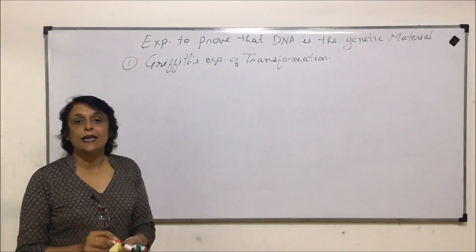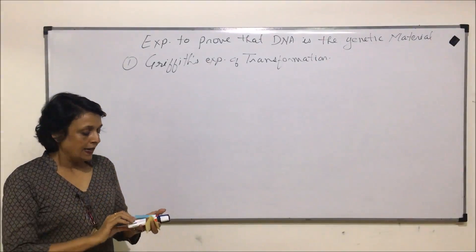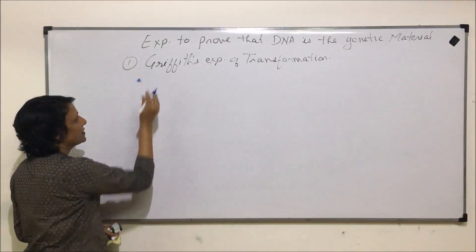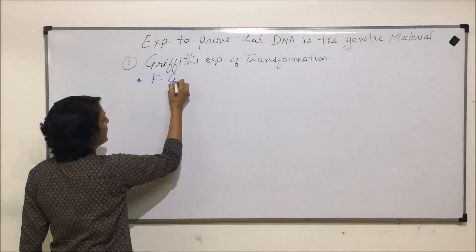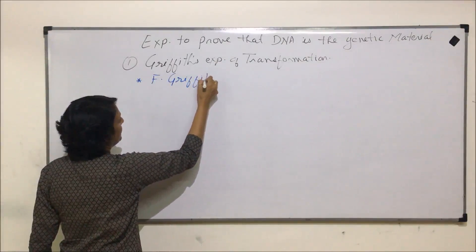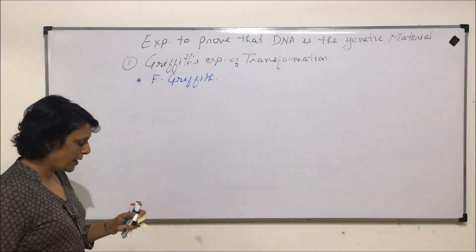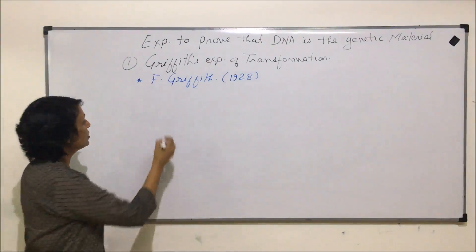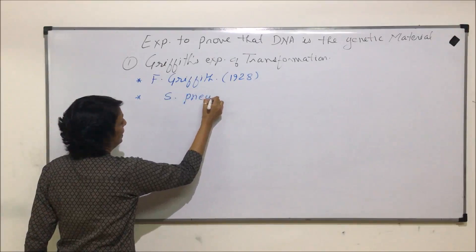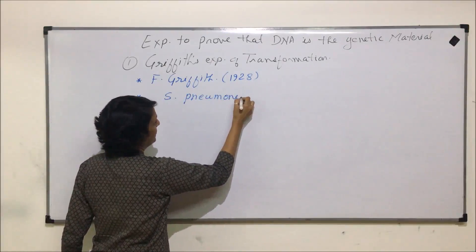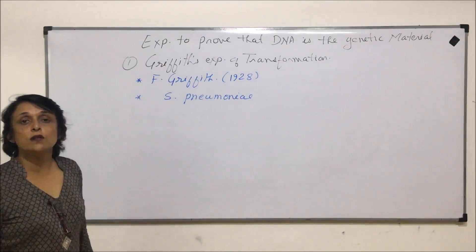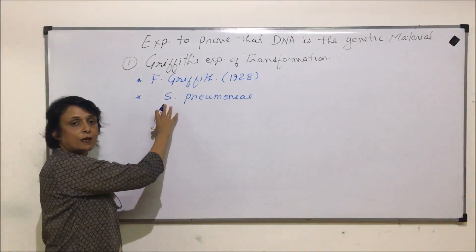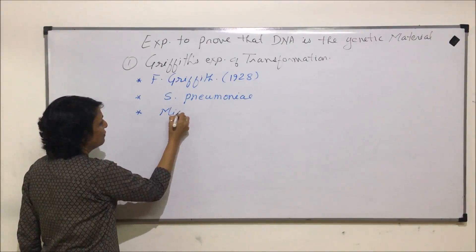Before we talk about the experiment's conclusions and everything, let us see what exactly he used for this experiment. As the name tells us, it was Frederick Griffith who performed this experiment. He performed this experiment in the year 1928. He used Streptococcus pneumoniae, which causes a particular type of pneumonia in mice.